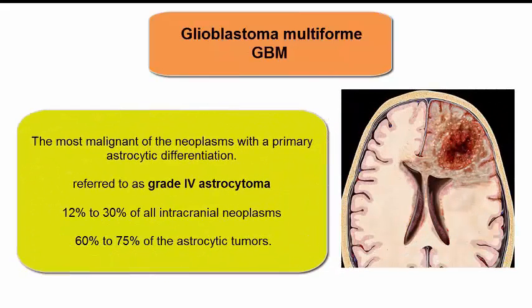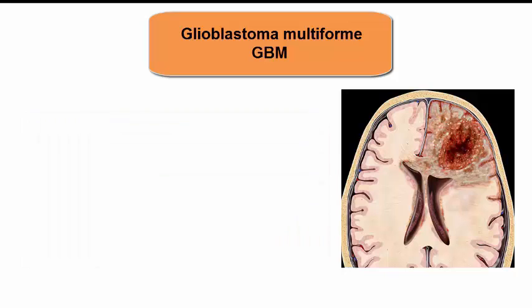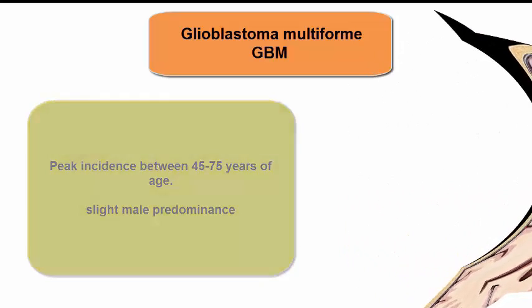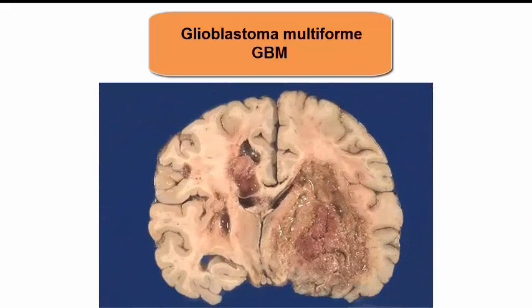Glioblastoma multiforme (GBM) is the most malignant of the neoplasms with a primary astrocytic differentiation. Glioblastoma is also referred to as grade 4 astrocytoma. It is the most frequent primary brain tumor, accounting for 12 to 30 percent of all intracranial neoplasms and 60 to 75 percent of astrocytic tumors. Although they may present at any age including newborns, the peak incidence is between 45 and 75 years of age, with a slight male predominance.